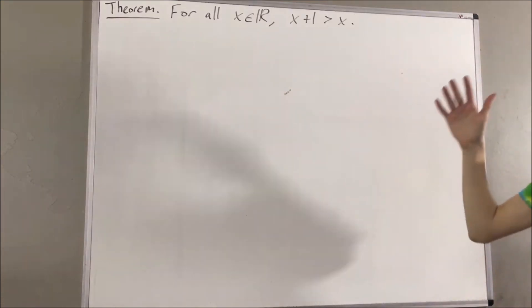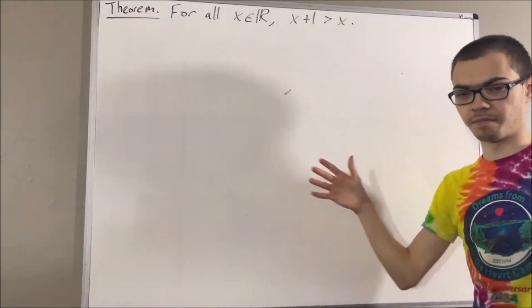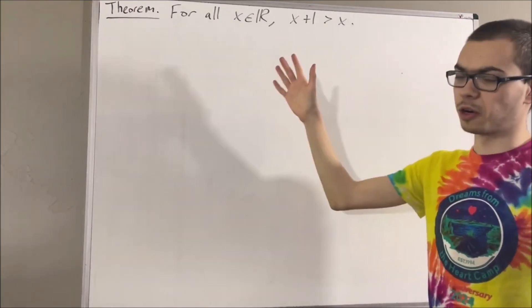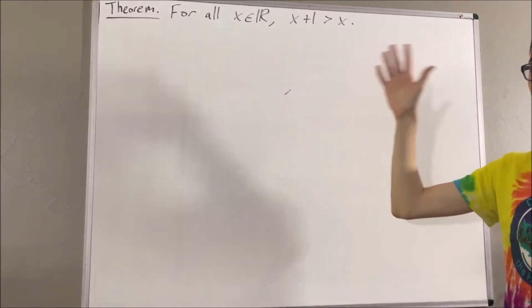Now in this series, we are using a list of 10 axioms for the real number system, and I'll link that list of axioms in the description below. In this video, we are going to be using axioms 1 and 4.